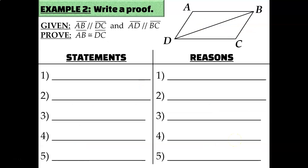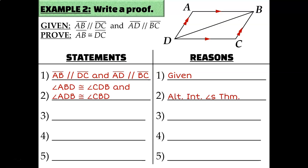Let's try another classic proof. We're given that AB is parallel to DC and AD is parallel to BC, and we want to prove AB is congruent to DC. Anytime you have parallel lines, look for corresponding, alternate interior, alternate exterior, or consecutive interior angles. Here I see alternate interior angles: angle ABD is congruent to angle CDB, and angle ADB is congruent to angle CBD — both by the alternate interior angles theorem. The two triangles also share side DB, which is congruent to DB by the reflexive property.